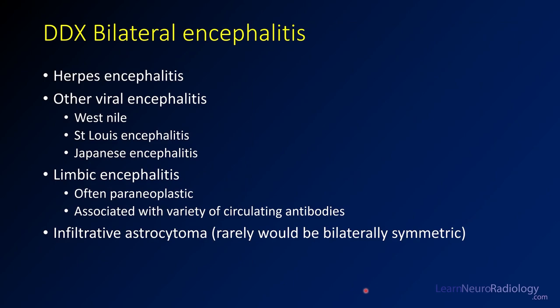What we're looking at here is a bilateral encephalitis. This is not something for which you can jump to a diagnosis immediately — it's really a differential. The thing you've got to worry about the most is herpes, just because the outcomes are so poor. But other viral encephalitis like West Nile and St. Louis encephalitis, you can think about those as well.